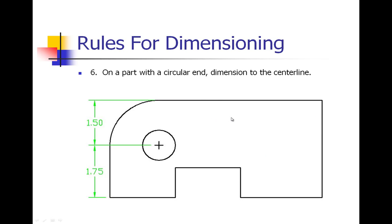Number six: on a part with a circular end, you should dimension to the center line. We put our center mark in, and we should dimension to the center line. We would delete out that little piece of center line and go right to that center mark. That will help you place the circle, so we know that the center point is 1.50 inches down.